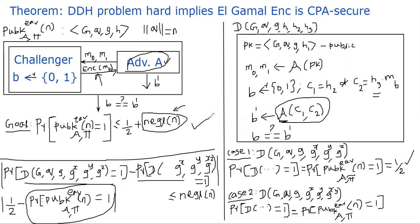So let me summarize what we proved. If the DDH problem is hard, then ElGamal encryption is CPA secure. To prove this, we constructed the challenger-adversary experiment where the adversary emits M0 and M1, the challenger encrypts one and sends it, the adversary guesses, and wins if his guess B prime equals the challenger's B. We showed the probability the adversary wins is at most one-half plus negligible of n. That's the proof.